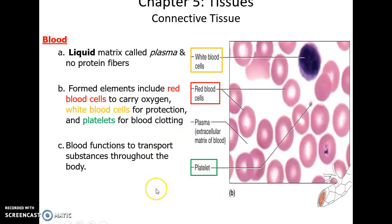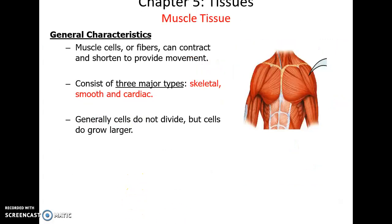Blood is the liquid connective tissue — it has a liquid matrix with no protein fibers, but there are proteins dissolved in the plasma. There are many cells: red blood cells, white blood cells, and platelets. One big function is transporting substances throughout the body.